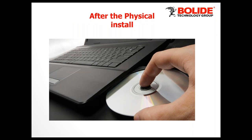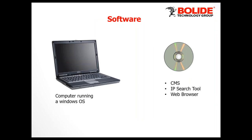Once you physically install the camera, we'll show you how to set up the software. The camera comes with a CD where you can install an IP search tool on your laptop. When you run the program and click search, it will find any device connected to your network. I can't emphasize how important the IP search tool is — we get a lot of calls about not being able to find the IP address. This tool will be your best friend in the field.